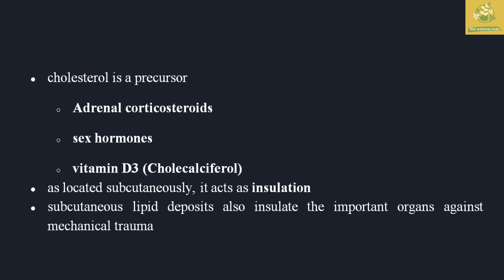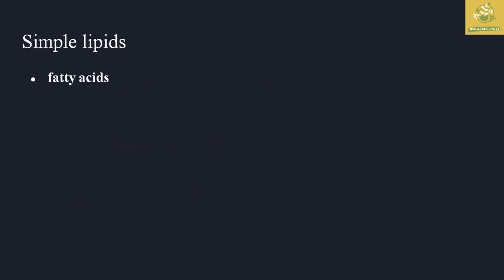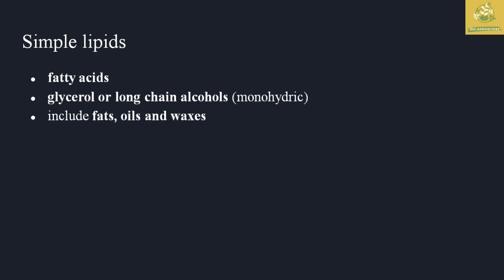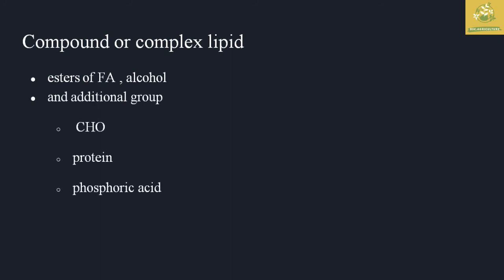Lipids also provide protection against mechanical trauma. If you classify lipids, you can classify them into three groups: Simple Lipids, Compound Lipids, and Derived Lipids. Simple lipids are composed of fatty acids and glycerol — long chains of alcohols and monohydric alcohols. Examples include fats, oils, and waxes. Compound or complex lipids are esters of fatty acids and alcohols with additional groups such as CHO, protein, and phosphoric acids.